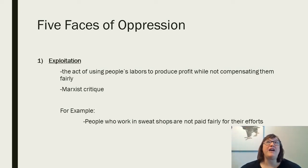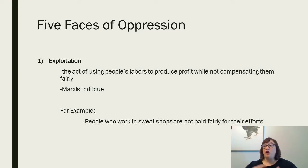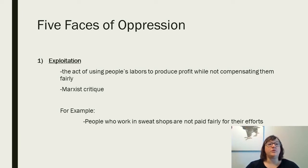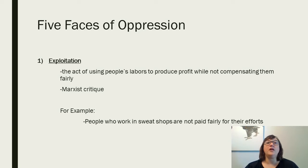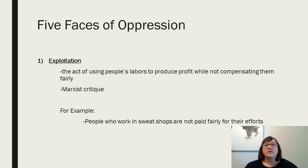Now we get to the actual five faces of oppression. A person can be oppressed in one of these ways or in all five, and these different vectors of oppression cross-cut each other. The first one Young talks about is exploitation, which she defines as the act of using people's labors to produce profit while not compensating them fairly. Examples include people who work in sweatshops, or people in Amazon fulfillment centers who may receive a wage but are required to work themselves to the bone, can't take breaks, and aren't compensated fairly for the amount of work they're doing.